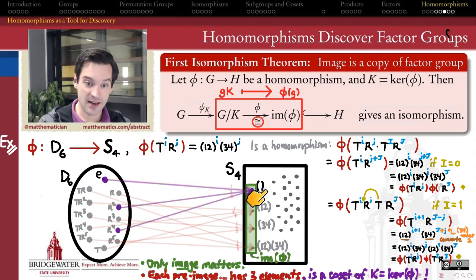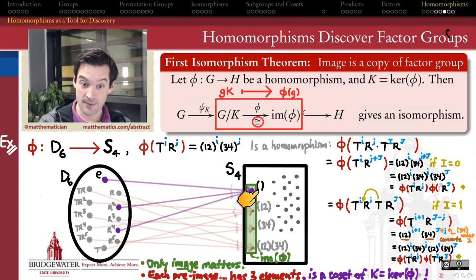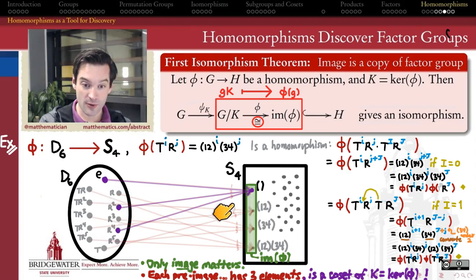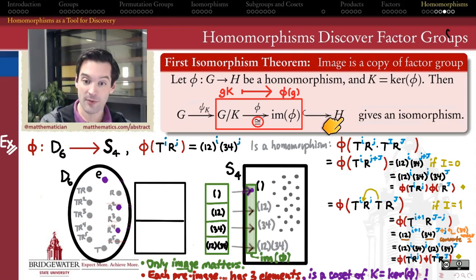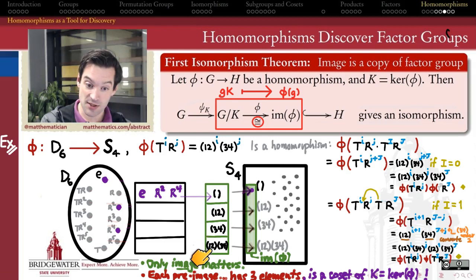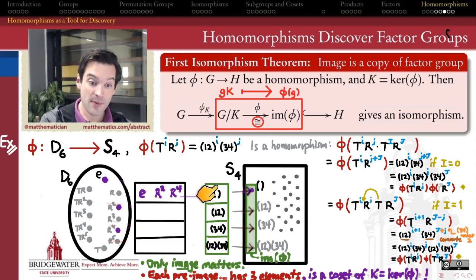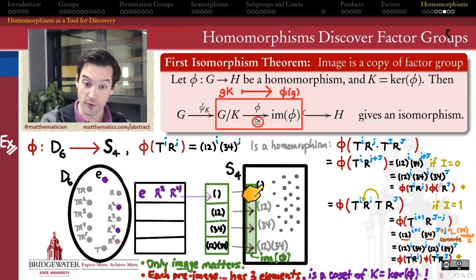Those three-element inverse images are cosets of the kernel of phi — the kernel being the inverse image of the identity. The kernel consists of {E, r², r⁴}: those three elements are the kernel of this homomorphism. All the cosets of that kernel map to the same element, so all three elements in each coset go to the same place.